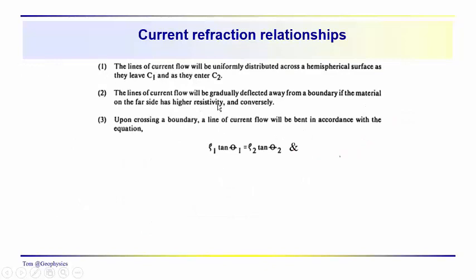I also want to introduce some additional ideas. We're going to be talking about current refraction across an interface briefly. Generally, there are a few relationships to keep in mind. The lines of current flow are uniformly distributed across a hemispherical surface. Current flow will gradually be deflected away from a boundary if the material on the far side has a higher resistivity. And conversely, upon crossing a boundary, a line of current flow will be bent in accordance with this relationship.